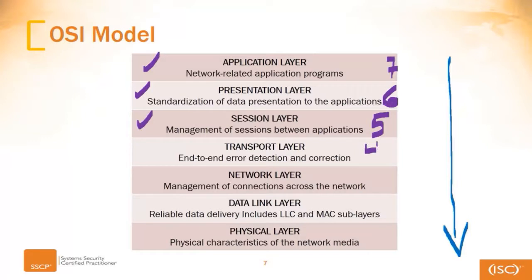Then we have the transport layer, layer 4. We're moving our way down here slowly but surely. The transport layer handles end-to-end error detection and correction. I like to think of the transport layer as something like FedEx or UPS. It's where we package up all of our data, make sure it's wrapped up nice and securely, in a box, with the right label, addressed correctly, bubble wrap inside so things don't bang around too much, and sealed up with tape.